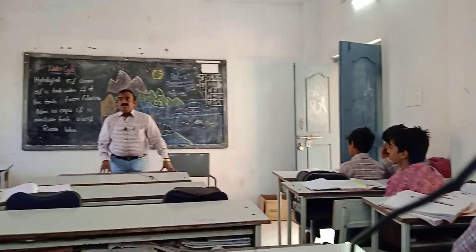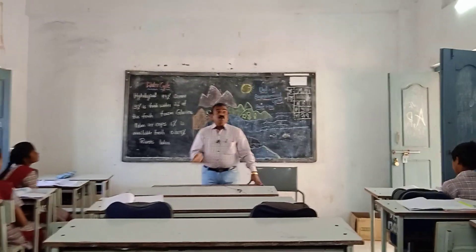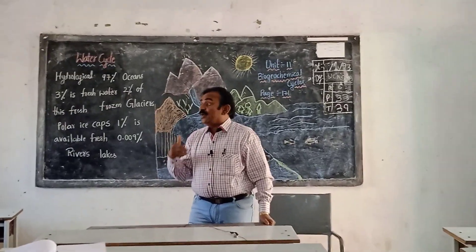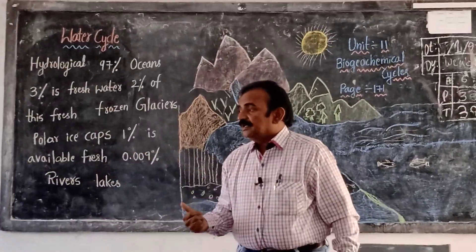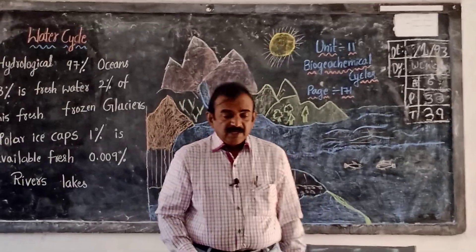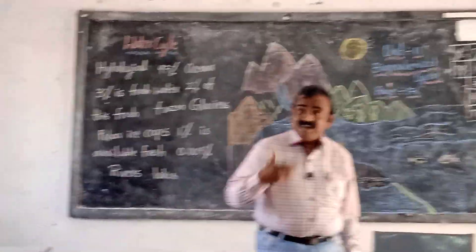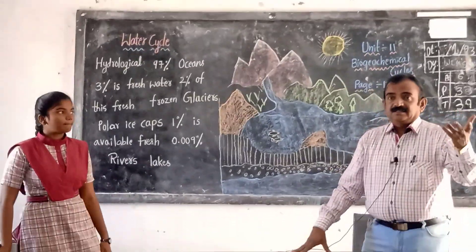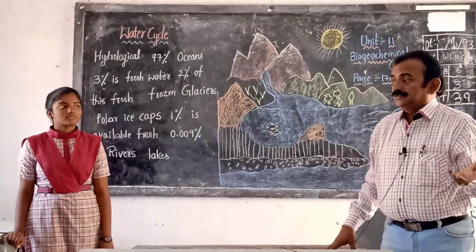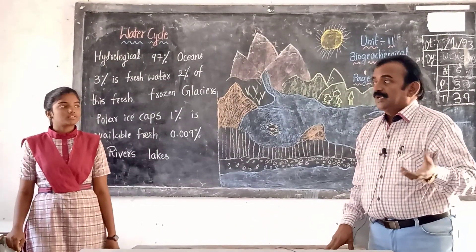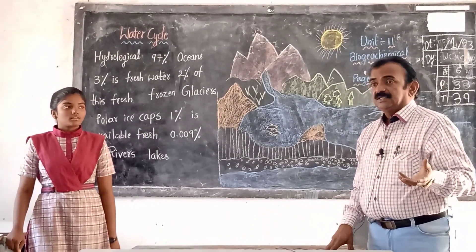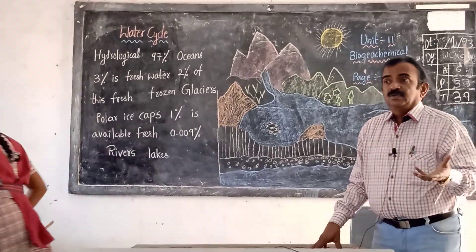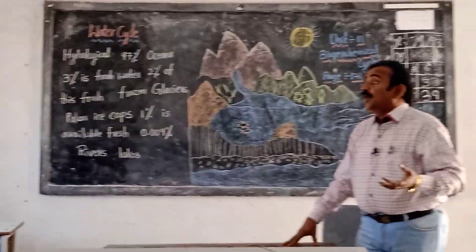Do you know what are oceans and rivers? Do you know what are water resources? Name some water resources. Where will you observe the presence of water on Earth? Lakes, ponds, rivers, oceans, pools, ditches, brooks - all these are water resources.